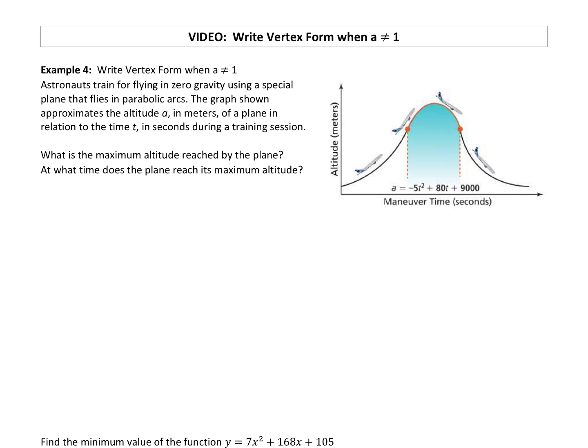So I'm going to go ahead and rewrite the equation. We have a equals negative 5t squared plus 80t plus 9000. Now if you notice, it's not set equal to zero right now. We have a variable over here.